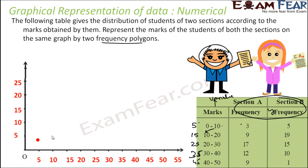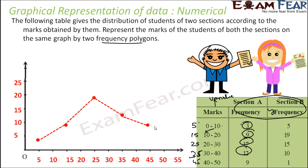Plotting the points for section A: (5, 3), (15, 9), (25, 17), (35, 12), (45, 9). I have plotted all the points in red and joined them. This is my frequency polygon for section A.